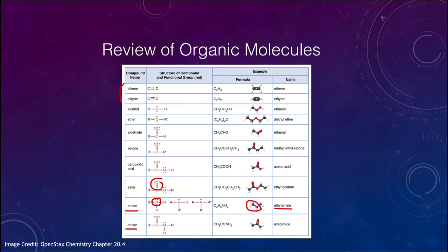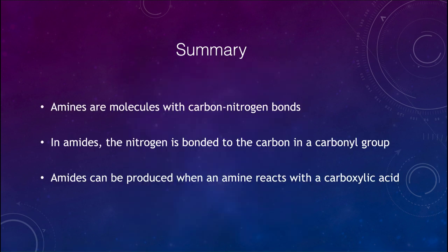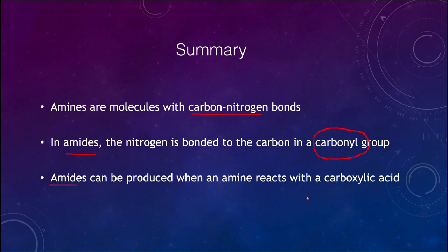Let's finish up this lecture with our summary. What we looked at in this lecture was the amines, which have carbon-nitrogen bonds, and the amides, where the nitrogen is bonded to a carbonyl group — a carbon-oxygen group. We also discussed how amides can be produced when an amine reacts with a carboxylic acid. Together, we summarized the different organic molecules covered in this unit. That concludes this lecture on amines and amides. We'll be back again next time for another topic in physical science — have a great day, everyone, and I will see you in class.